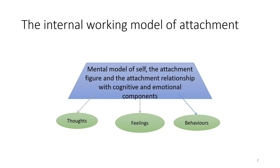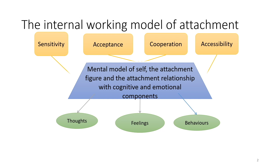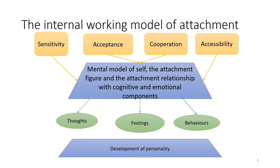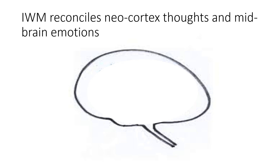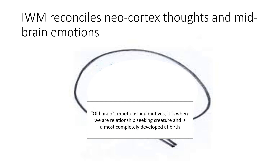This representation of attachment develops from the child's experiences of their attachment figure's sensitivity, acceptance, cooperation and accessibility. Over time the internal working model becomes generalised to other relationships. It plays a part in shaping the emerging personality. This internal representation of attachment reconciles old brain emotions and new brain thoughts.